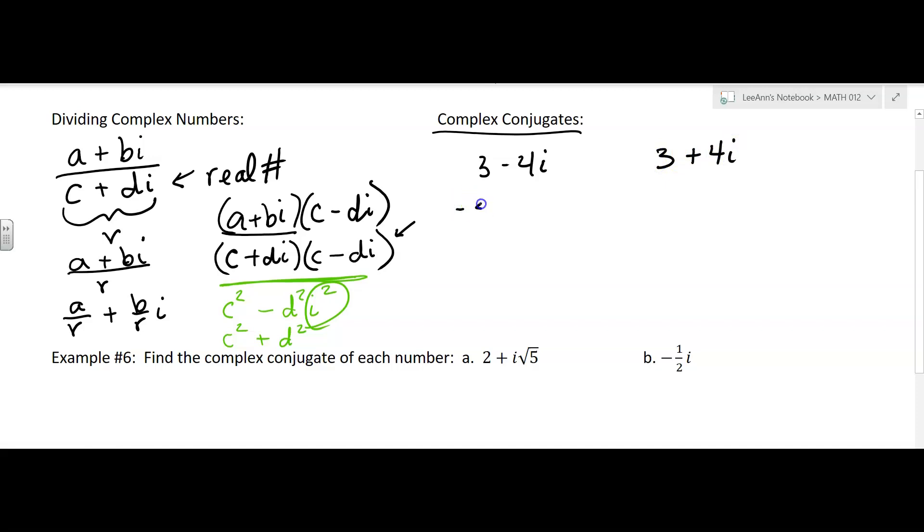If you have negative 5 plus 2i, the complex conjugate is going to be negative 5 minus 2i. The only thing that changes is the symbol between the two parts. If it's plus, then it changes to minus.